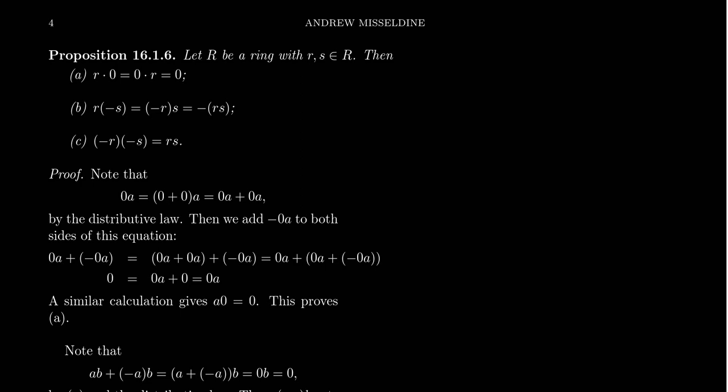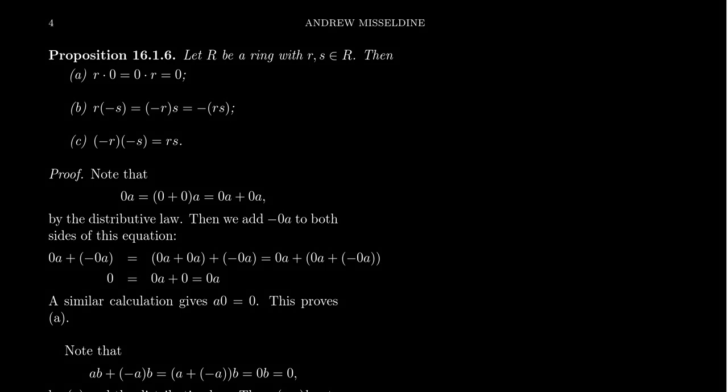In this video, I want to prove some important, very elementary properties of rings. Let R be a ring and let r and s be arbitrary elements of that ring. The first property says that if you multiply any element of the ring by zero, you get back zero. Zero has this dominance property — sometimes called an absorption property — that anything times zero gives you back zero.